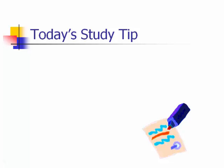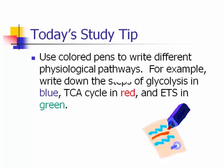Today's study tip: use color pens to write different physiological pathways. For example, write the steps of glycolysis in blue, the citric acid cycle in red, and the electron transport system in green. Some of you already do this — I've seen you with four pens on your desk, writing notes and drawing little pictures in different colors.